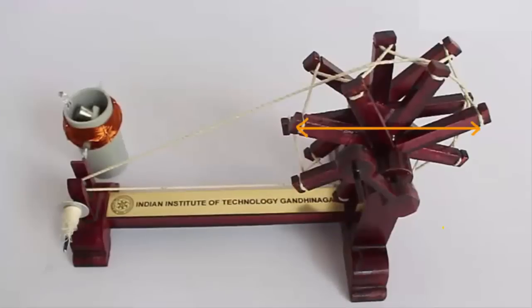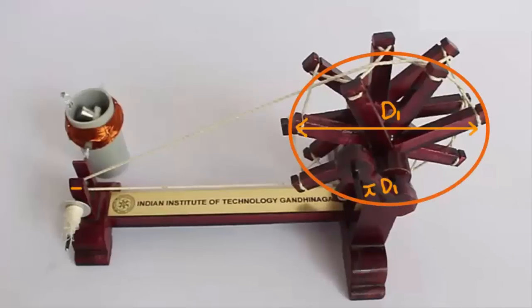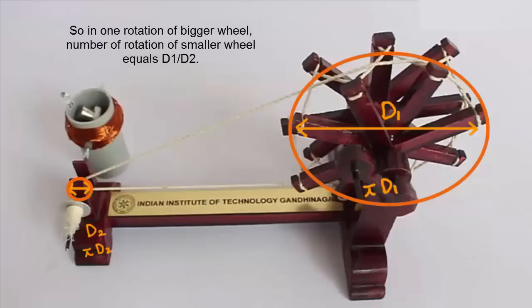Now the diameter of the larger wheel is d1. The amount of thread that moves in one spin of the larger wheel is pi times d1. Now this thread passes over the smaller wheel of diameter d2. Hence in one spin, the smaller wheel covers the thread by pi times d2. So in one spin of the larger wheel, the smaller wheel will spin pi times d1 by pi times d2. So the ratio of the spins is the ratio of the diameters.